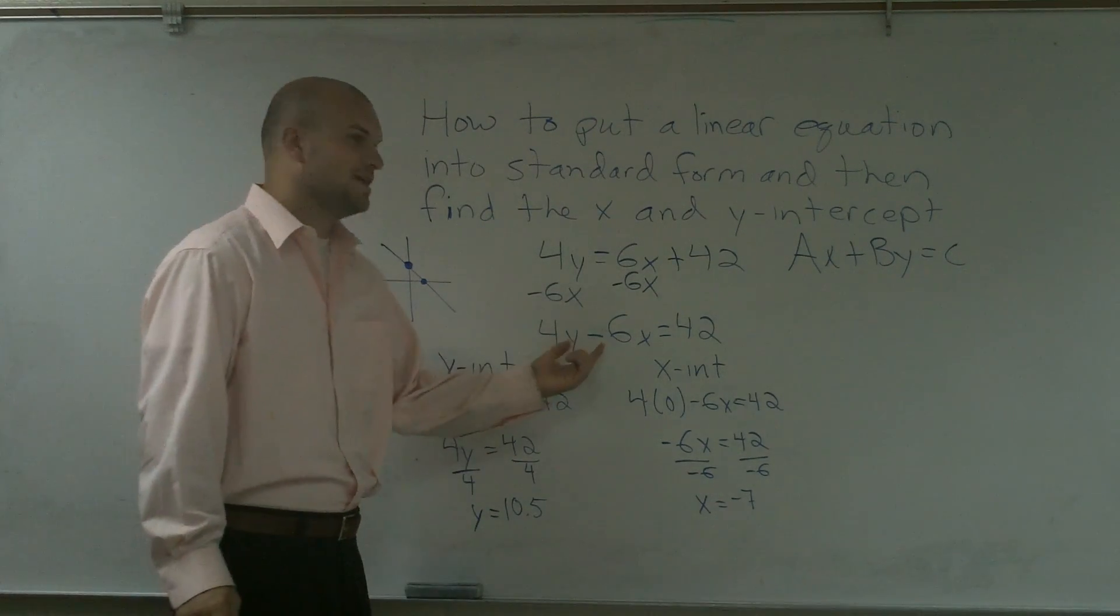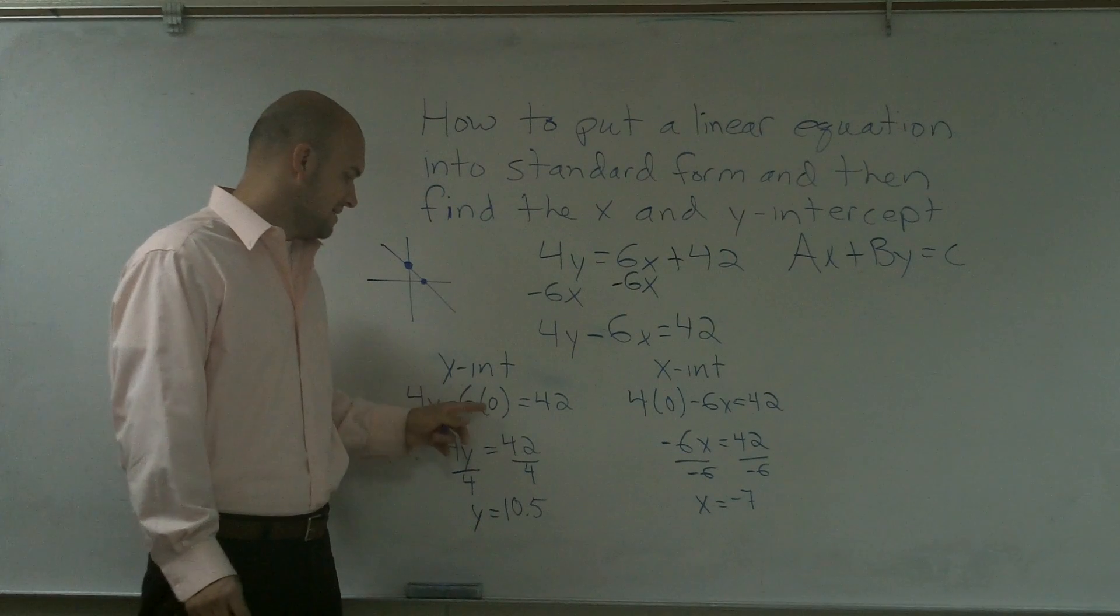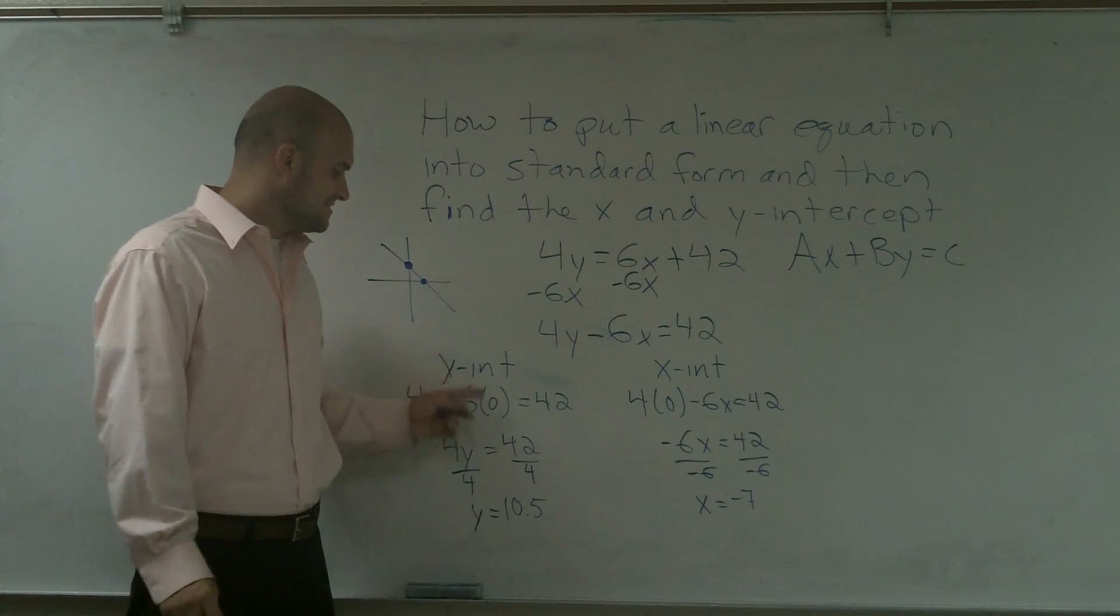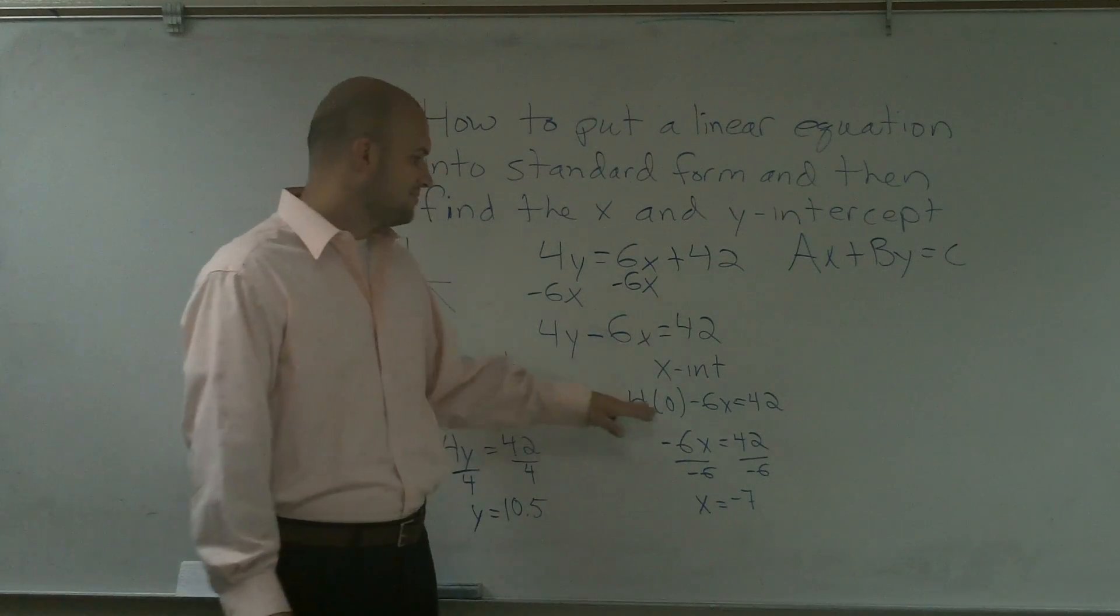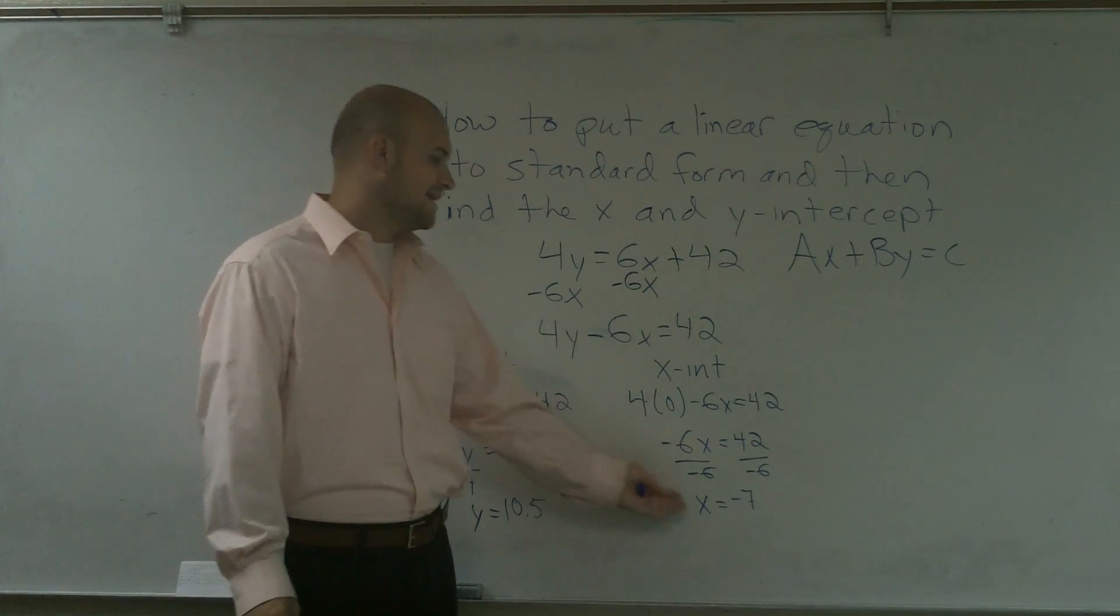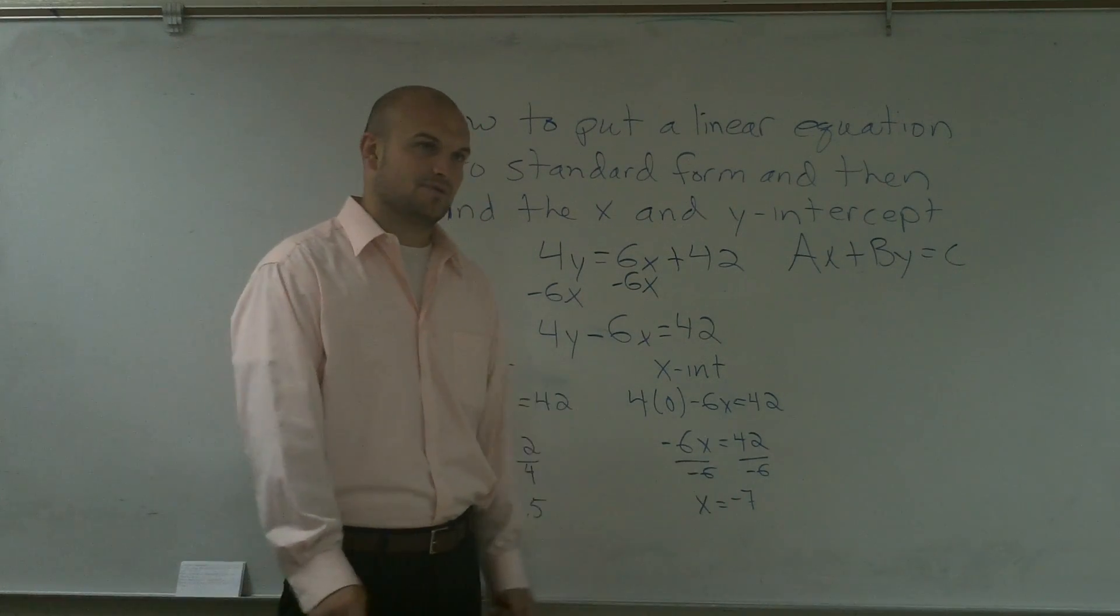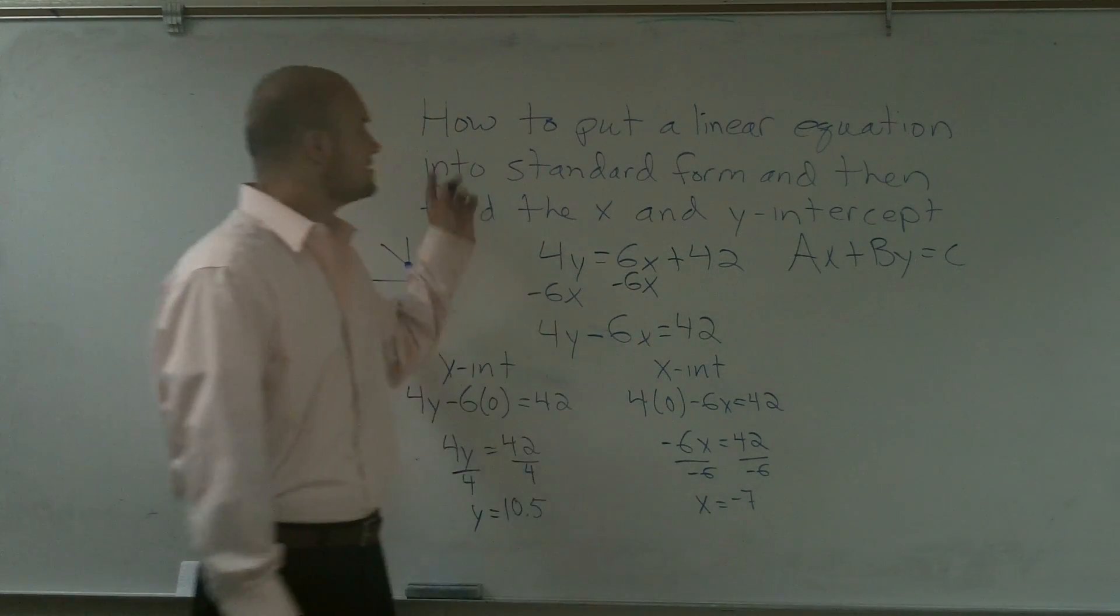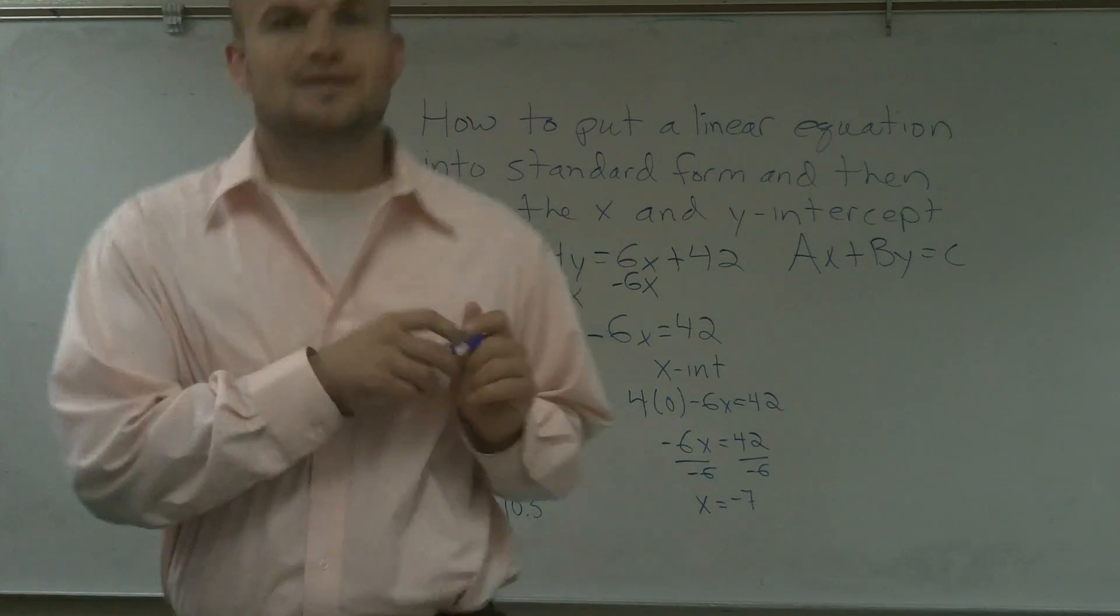So therefore, when you have given an equation and you need to find the y intercept, plug in a 0 in for x and solve, you get 10.5. And when you're solving for the x intercept, you plug a 0 in for y and solve for x, and you get your x value which is your x intercept. That's how you put a linear equation first in standard form and then how you find the x and y intercept.